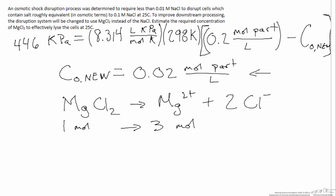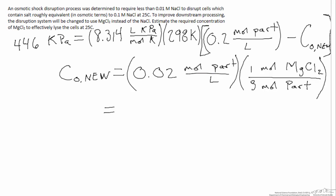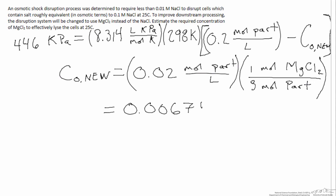Taking the information that 1 mole of magnesium chloride produces 3 moles of magnesium and chloride ions, we convert from moles of particles per liter to moles per liter of magnesium chloride. Using that 3-to-1 conversion, we determine that the required concentration of magnesium chloride is 0.0067 moles per liter — or 0.0067 M MgCl₂.